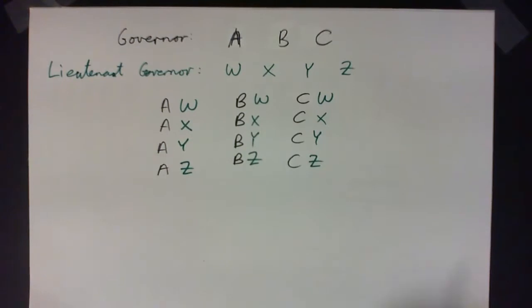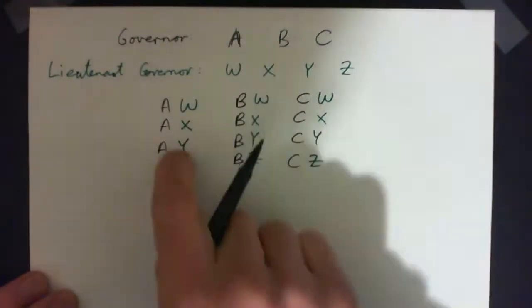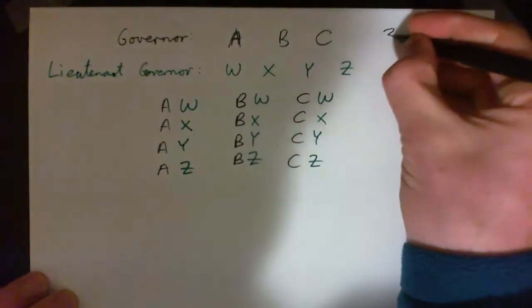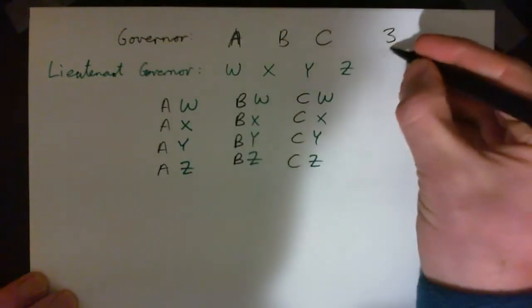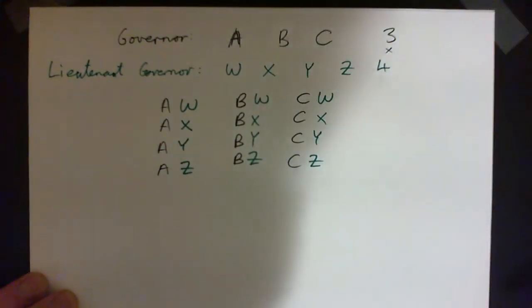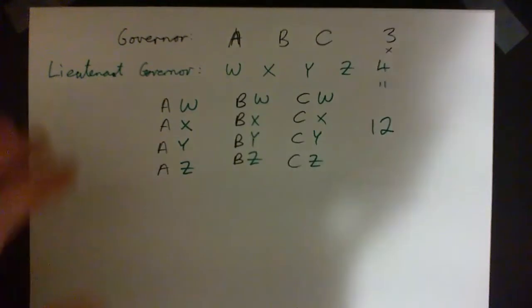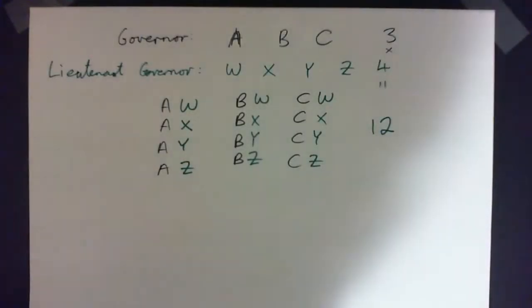So how many possible ways can we vote for a governor and then a lieutenant governor? How many do you see? I see 1, 2, 3, 4, 5, 6, 7, 8, 9, 10, 11, 12. Right? Or you could think, that's three of these times four of these possibilities and that makes 12. Right? 12 possible ways to vote for governor or lieutenant governor.